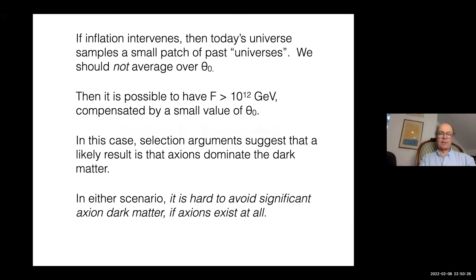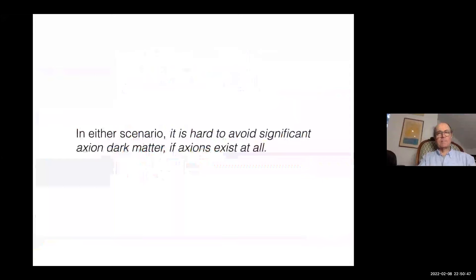In this scenario also, it's even harder actually to avoid significant axion dark matter if axions exist at all. So whichever way you go, if axions exist, they have to be a big part of the dark matter. Then Occam's razor suggests they're essentially all of it. Now let me get to the recent exciting developments in experimental and designing antennas that seem capable of doing the job of detecting axions if they're there.